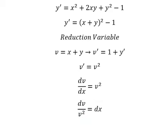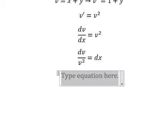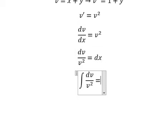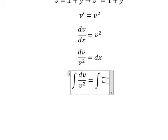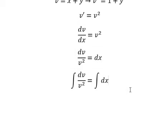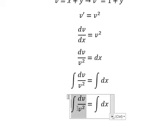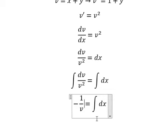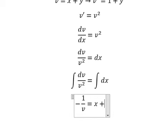Next we put the integration for both sides. So this one we have negative one over v. This one is x and I will put C.